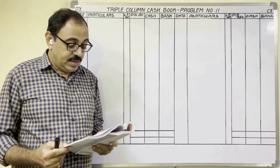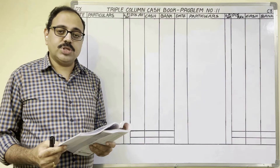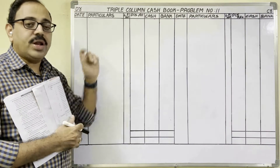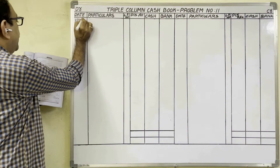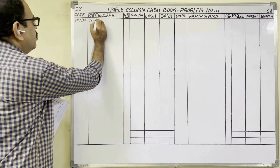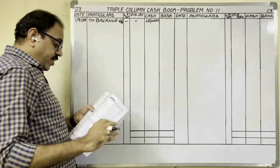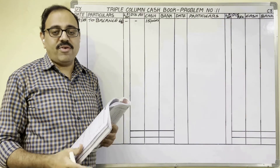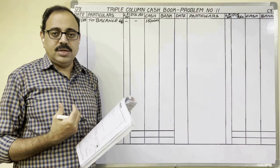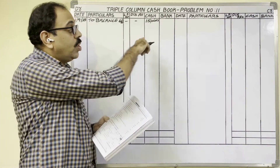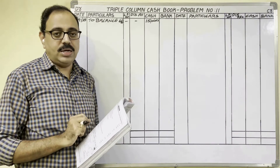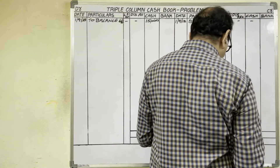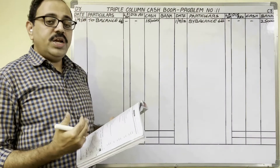First September 2018: cash balance 15,000 rupees. This is the opening cash balance. Cash is an asset, and assets show debit balance, so we write this on the debit side — 1st September 2018, balance brought down in cash column: 15,000 rupees. Next, bank balance in brackets CR is given — bank balance credit means bank overdraft, meaning the firm has taken a loan from the bank. This is a liability, so it shows a credit balance. Therefore, write balance brought down in bank column: 25,000 rupees on the credit side. From the fourth date onwards, transactions are given.